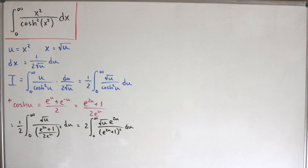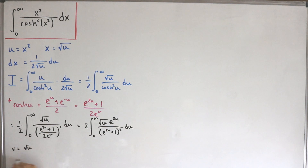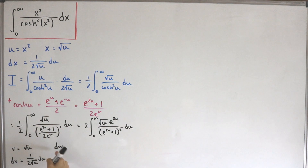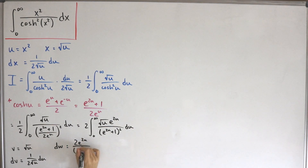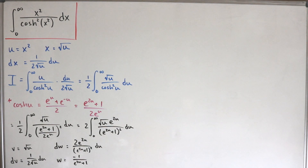Now we use integration by parts, using v and w notation. We choose v equal to the square root of u, so dv equals 1 divided by (2 times the square root of u) du. For dw we choose dw equals 2e^(2u) divided by (e^(2u) + 1) squared du, which integrates to w equals negative 1 divided by (e^(2u) + 1).